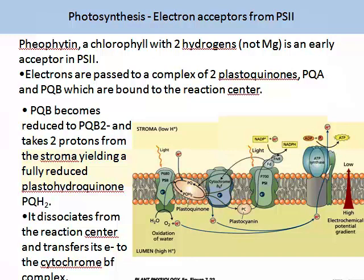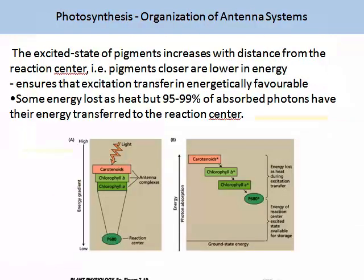PQB becomes reduced to PQB²⁻ and takes two protons from the stroma, yielding a fully reduced plastohydroquinone. It dissociates from the reaction centre and transfers its electrons to the cytochrome BF complex. The excited state of pigments increases with the distance they occur from the reaction centre. Put simply, if a pigment is closer to the reaction centre it is lower in energy. This ensures that excitation transfer in energetic terms is favourable. Some energy is lost as heat — about 95 to 99% of all energy.